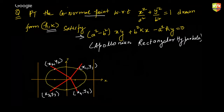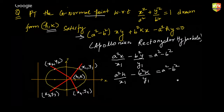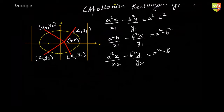Alright guys, it's very simple and should not take you much time. We all know that a normal drawn to (x₁, y₁) has a specific equation. So if I'm drawing a normal at (x₁, y₁), its equation satisfies h comma k. Similarly, the normal drawn from (x₂, y₂) — that is a²x/x₂ − b²y/y₂ = a² − b² — will also be satisfied by h comma k.